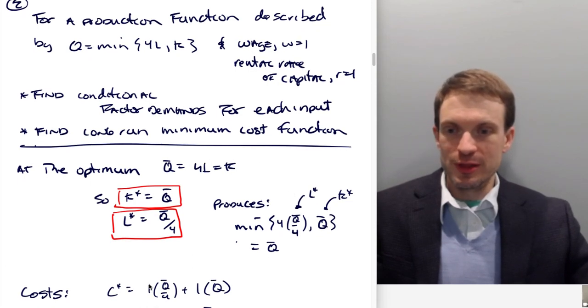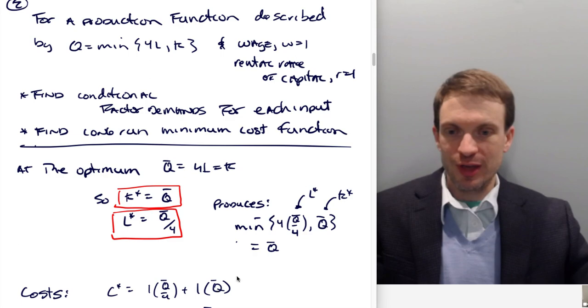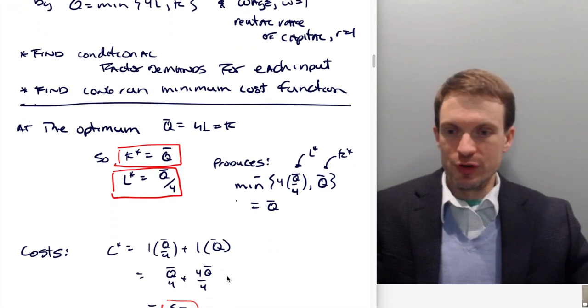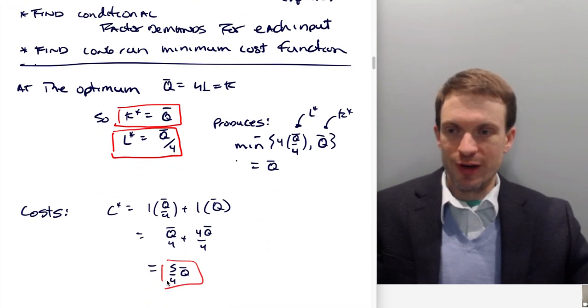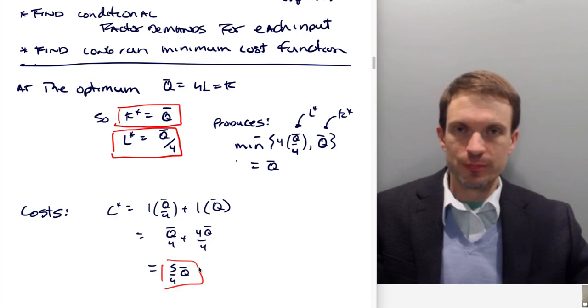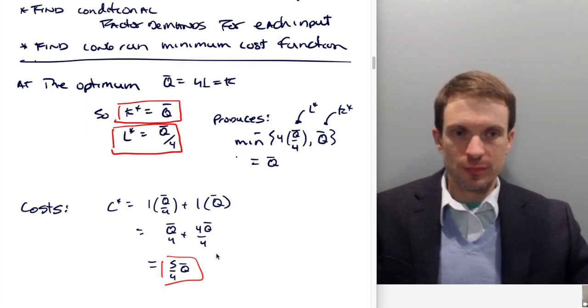What's this going to cost? Well, it's going to be the wage times the amount of labor used, plus the rental rate of capital times the amount of capital used. And if we do this, go ahead and we could find our total costs 5 fourths q. Okay, all right, very good.